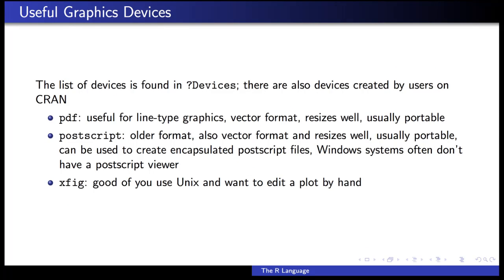There are a number of different types of graphics devices you can send plots to besides the screen. The screen will be the default for your platform — x11 on Unix, Windows on Windows, and Quartz on the Mac. Probably the most common file device is the PDF device, which is very nice for print quality graphics. For line-type graphics it's a vector format, so it resizes very well without losing quality, and it's viewable on pretty much any modern platform. Postscript is an older format, kind of a predecessor to PDF, and is generally not used very often — I would recommend against using it. XFig is a format specifically for Unix, useful if you want to edit the plot by hand, but not particularly common.